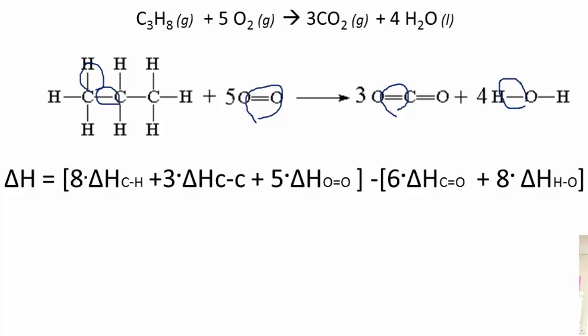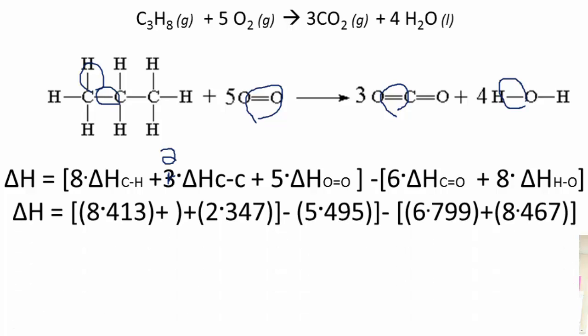So we're going to say eight times the delta H for carbon-hydrogen plus—oops, that's a typo, I'm sorry. That should right there be a two. Let's change this because you're actually two carbon-carbon bonds. Hopefully that's what I put in the problem. Plus five times the value for the oxygen-oxygen, and then six times the carbon-oxygen and then eight times the hydrogen-oxygen. That's what I did here. Oh yes, good. I switched that on this one.